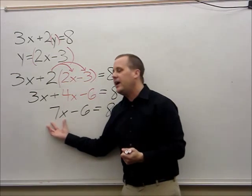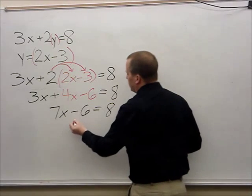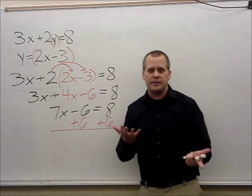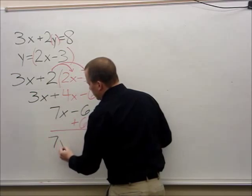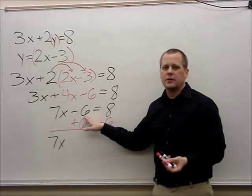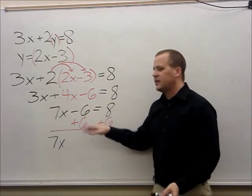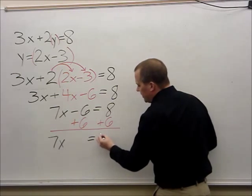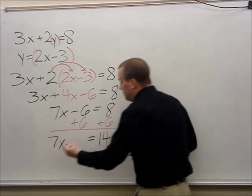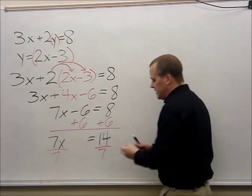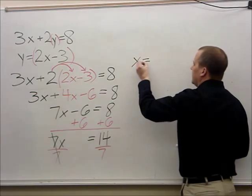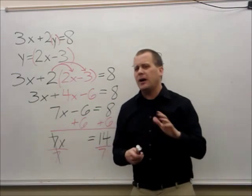I want to isolate the variable — get x all by itself. After 7x there's a negative 6, so I add 6 to both sides of the equation to balance it out. The 6s cancel out: negative 6 plus 6 is 0. Eight plus 6 is 14. Now 7 is in front of x, so I divide both sides by 7. Seven divided by 7 cancels out, and 14 divided by 7 is 2. So x equals 2.